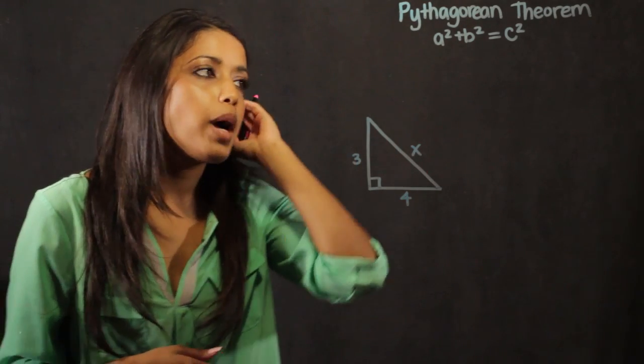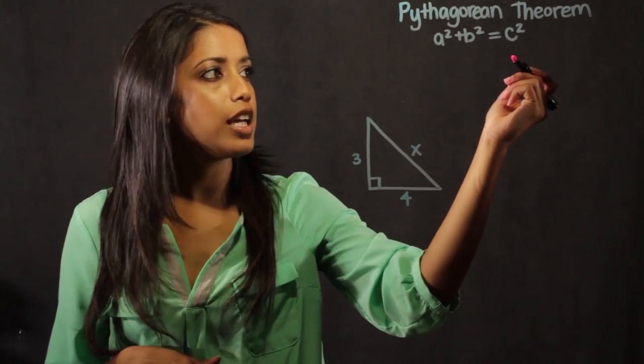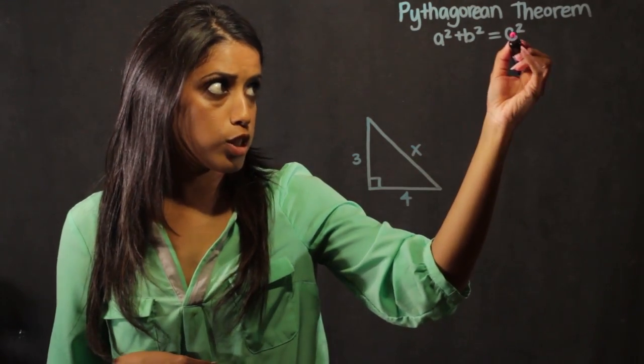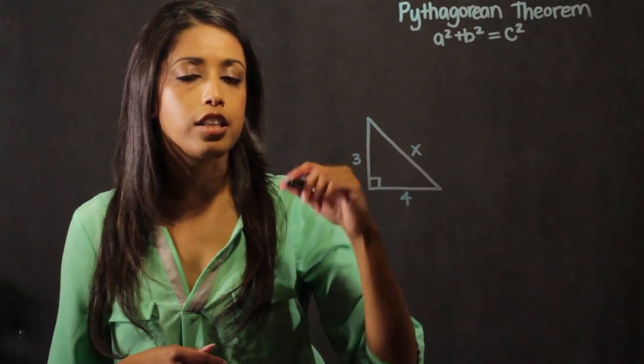So to derive my distance formula, what I want to do is isolate c. So to undo a squared sign, I basically take the square root.